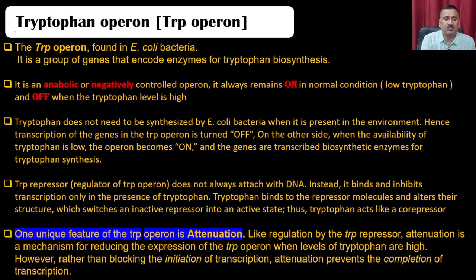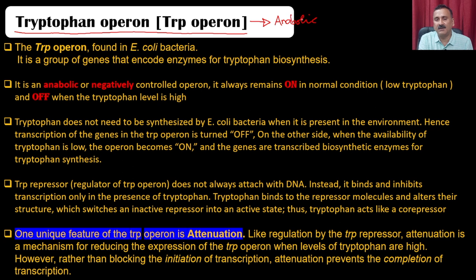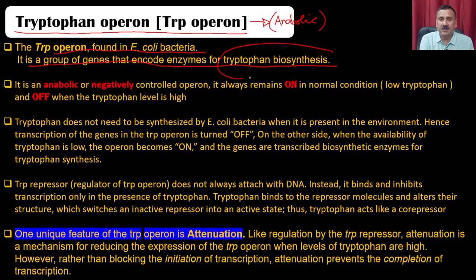Let us move on to the next operon: the tryptophan operon. The tryptophan operon is a part of the anabolic operon, compared to the lac operon which is a catabolic operon. The tryptophan operon is found in E. coli and is a group of genes that encode enzymes for synthesis.